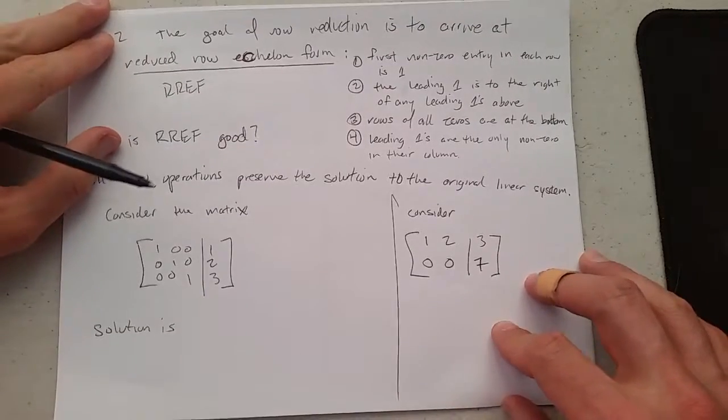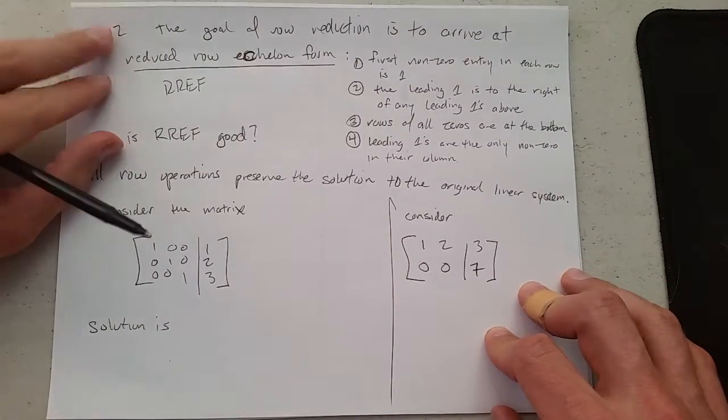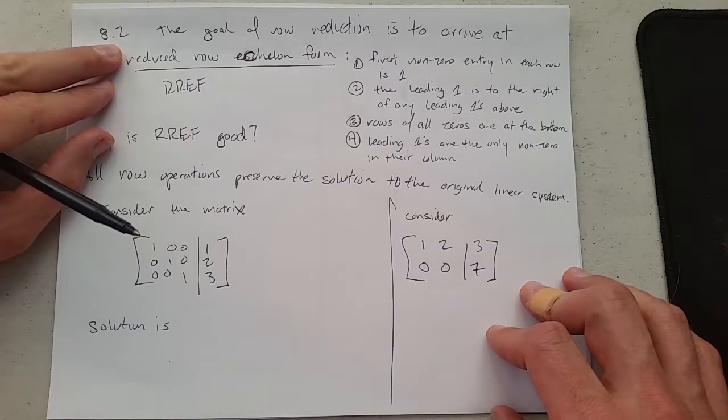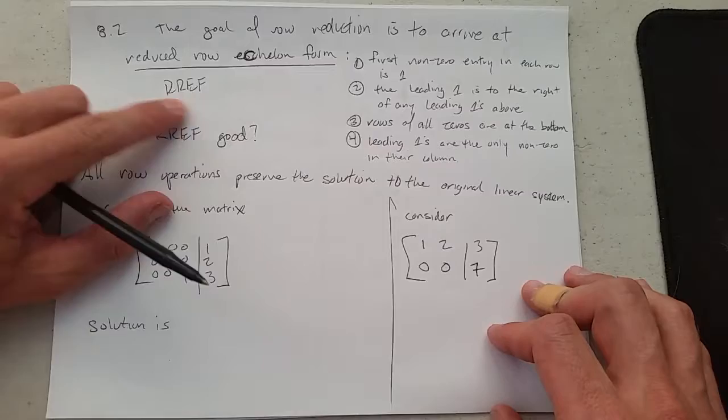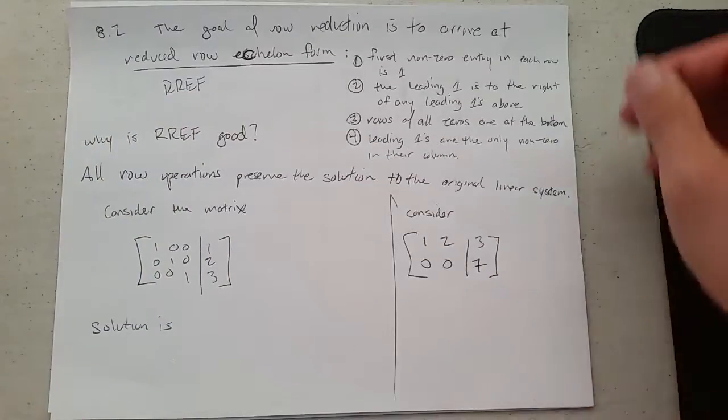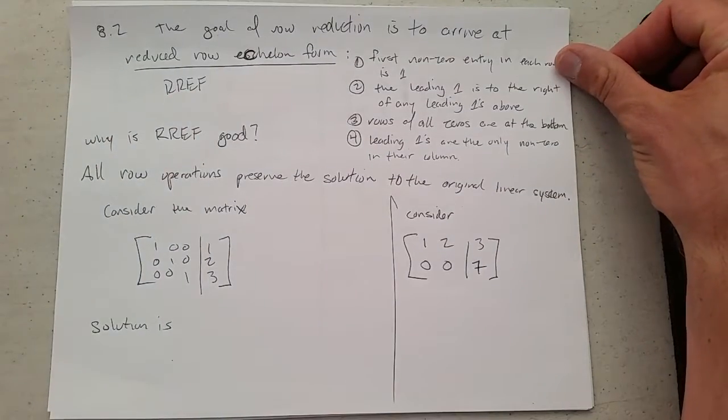So the entire goal of row reduction is to arrive at this row-reduced echelon form. I'm going to be lazy when I write and just write this as row-reduced echelon form, R-R-E-F. What is row-reduced echelon form?